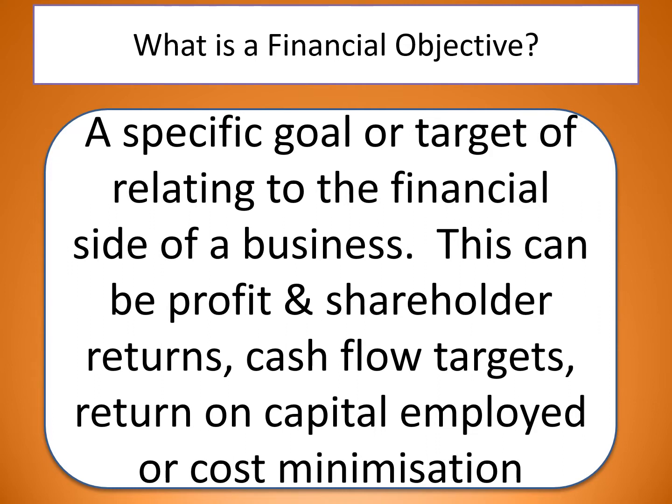So it could be that we're aiming for a 5% profit increase, or we're looking at being able to give out a certain amount of dividends, or we're just looking at surviving — so we've got our cash flow targets set up. It could be a return on capital employed, or it could just be trying to minimize our own costs.